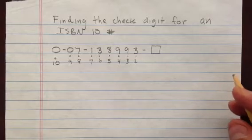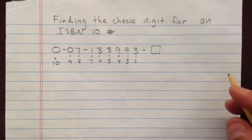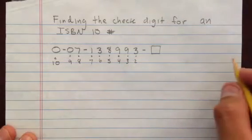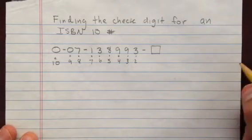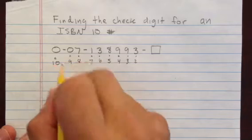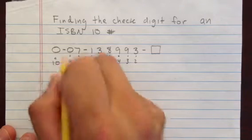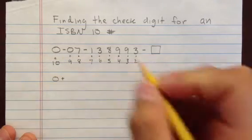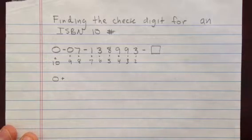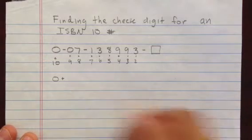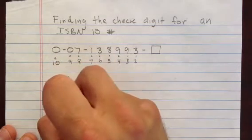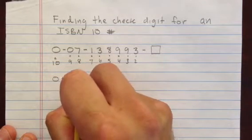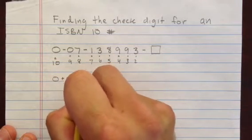Remember, you can pause this video at any time if I'm going too fast. Then go ahead and get the products from that. So 10 times 0 is 0. We're going to find the sum of those, so I'll put plus signs between them. 9 times 0 is 0, and so on — go ahead and find all the products.